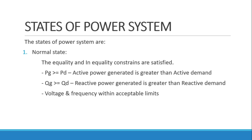In the normal state, both the inequality and equality constraints are satisfied. The equality constraint is that the active power generation PG will be greater than or equal to the active power demand PD. Similarly, the reactive power generation should be greater than or equal to the reactive power demand QD. The inequality constraint is that voltage and frequency should be within acceptable limits.